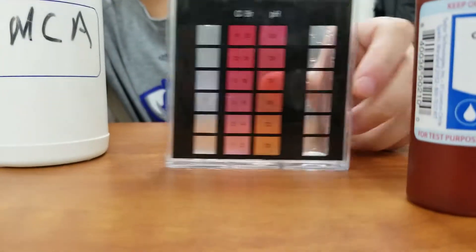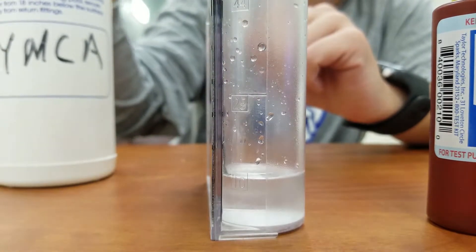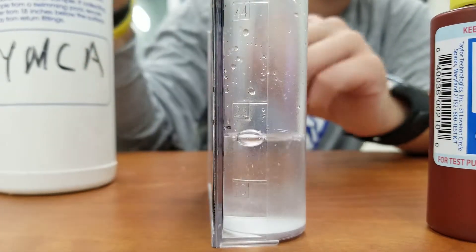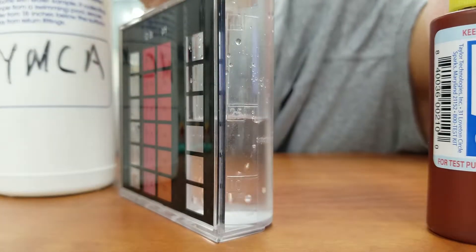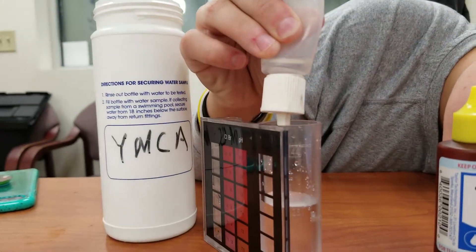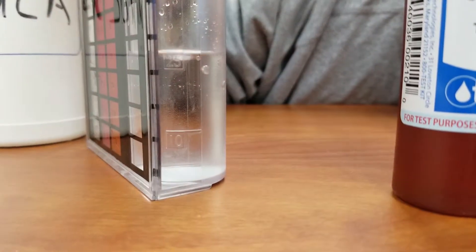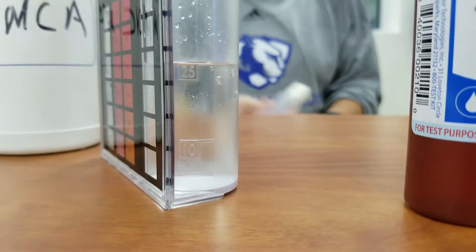We're going to take our large compartment or tube and fill it up to the 25 mark. Again, we're going to use the bottom of the bubble, the surface tension there to get to that 25 mark. We're using a little dropper with a sample of water. Okay, and that gets us up to our 25 mark.